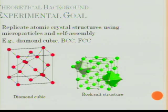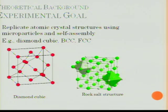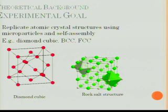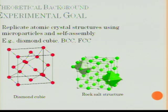So what are we trying to do with these Janus particles and self-assembly? Basically, our overriding goal is to try to replicate atomic structures that you learn in materials science — the BCC (body-centered cubic), FCC (face-centered cubic), rock salt, and similar structures. Instead of using atomic forces and atoms, we are trying to recreate them using electrostatic forces with microparticles and self-assembly.